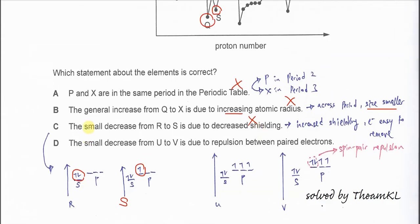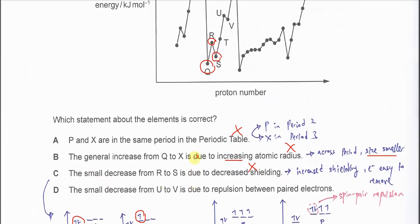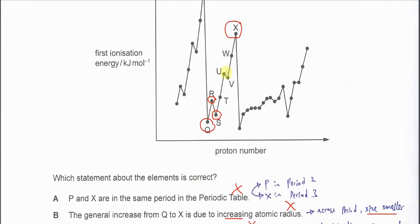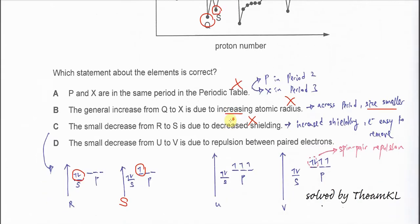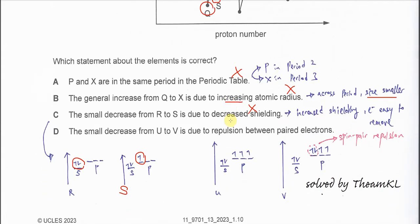D. The small decrease from U to V. Small decrease from U to V, this is group 15 to 16, is because of spin pair repulsion.